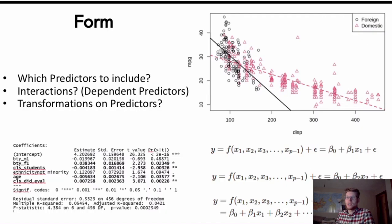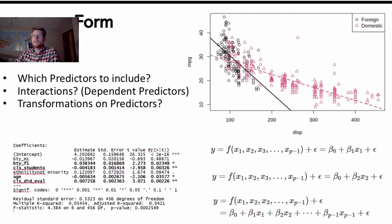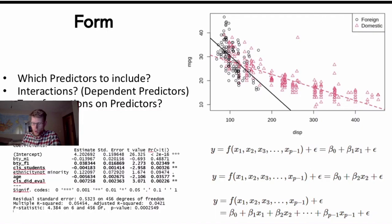That goes into this question of what is the form of our model going to take, what terms are we including and different things like that. Transformations will also be talked about in a later chapter as well. What do we do when our variance is not constant? When maybe the relationship doesn't appear strictly linear? And these equations over here are just highlighting the fact that if I have some response variable y and I have some information represented in these different predictors, I'm choosing which predictors to include. Do I include the first one? Do I include the second one? Do I include all of them? Do I include some of them? Those are issues of form.